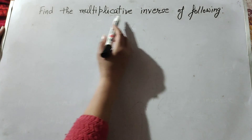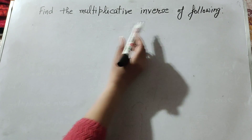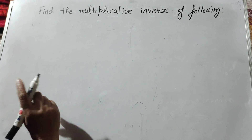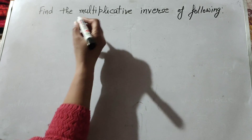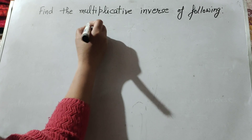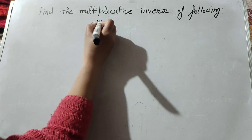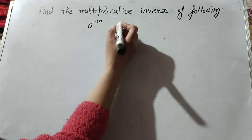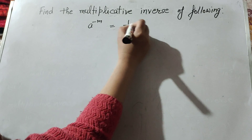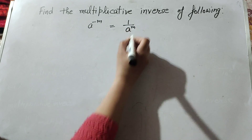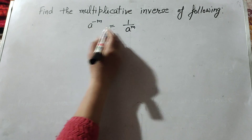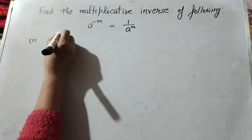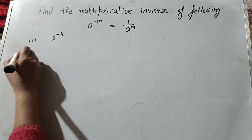Hello friends, welcome to my channel. In this video we discuss finding the multiplicative inverse. Multiplicative inverse means any two numbers are multiplied and we get the answer one, so one number is the multiplicative inverse of the other number. In general, a raised to power minus m has multiplicative inverse 1 over a raised to power m. Now we move to the first part: 2 raised to power minus 4.